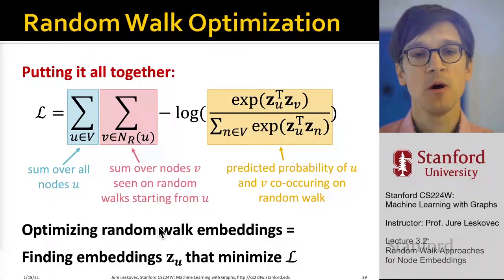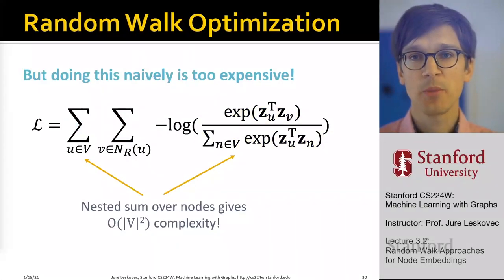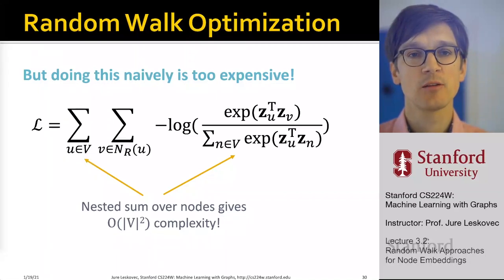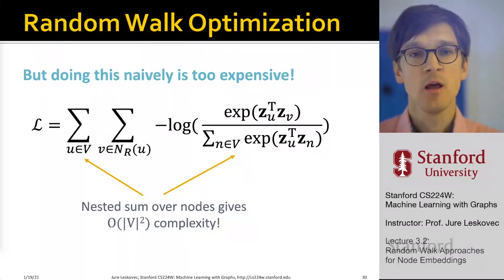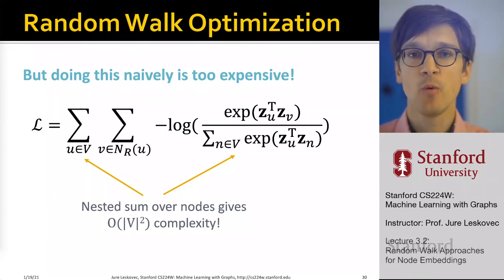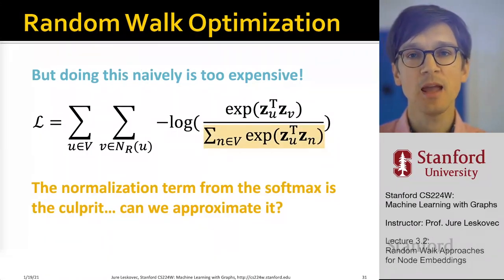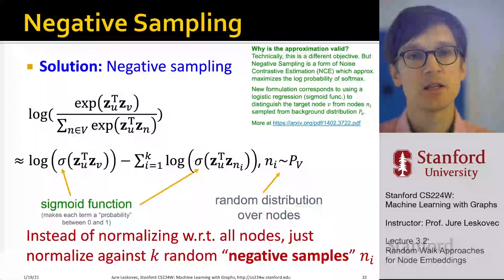The problem is that this is very expensive. We have two nested summations over all nodes of the network — one for starting nodes of the random walks, and one inside the softmax normalization over all nodes again. This double summation gives complexity of order V squared — quadratic in the number of nodes — which is prohibitively expensive. The issue is that the softmax requires summing over all nodes to normalize it back to a distribution.